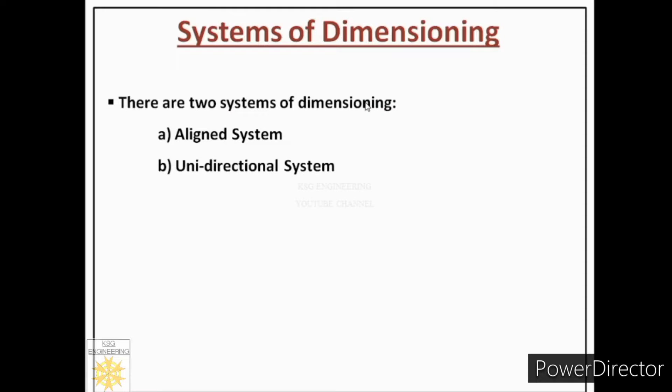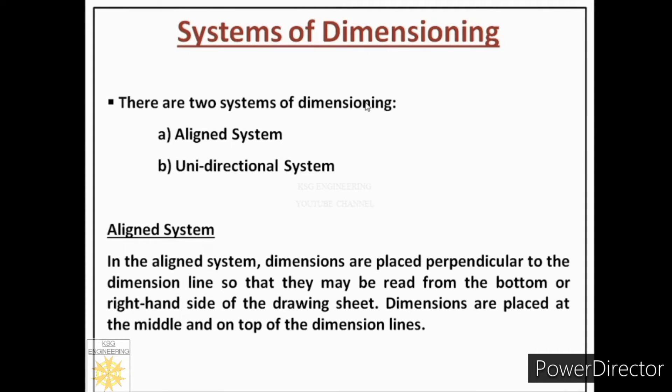There are two systems of dimensioning. We call these the aligned system and the unidirectional system. Let us first talk about the aligned system.